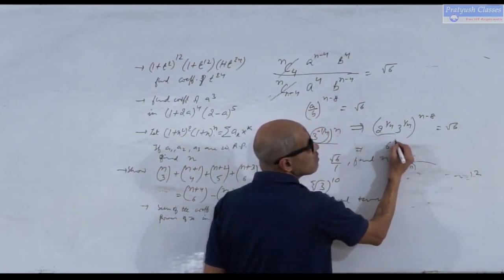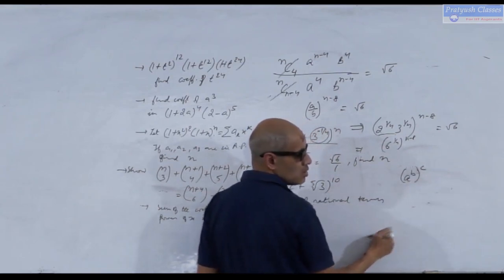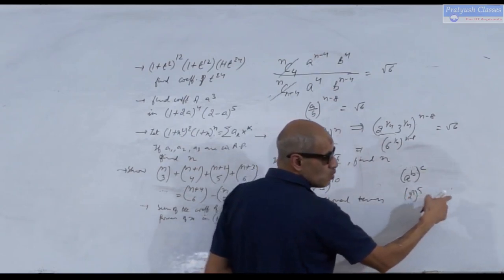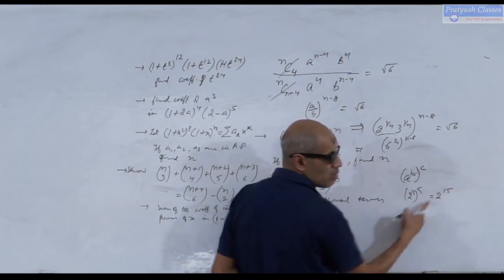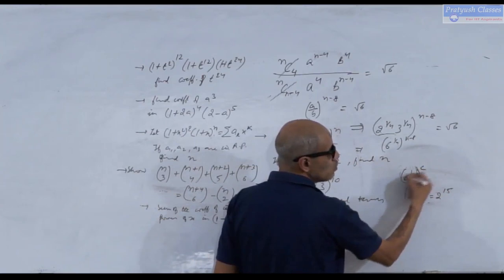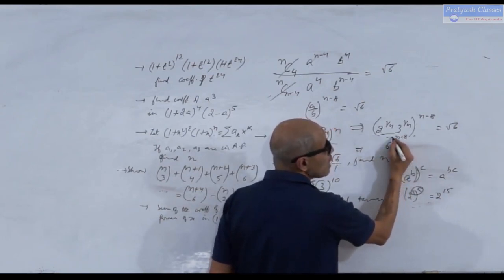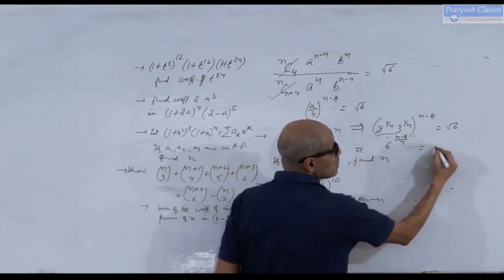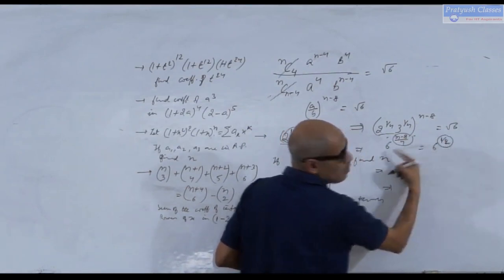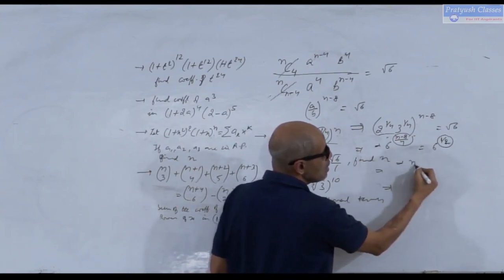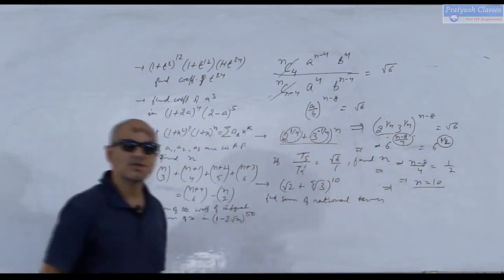So 6^((n-8)/4) = 6^(1/2), since √6 = 6^(1/2). Since the bases are the same, we equate the exponents: (n-8)/4 = 1/2. Therefore n-8 = 4 × (1/2) = 2, giving n = 2 + 8 = 10. The value of n is 10.